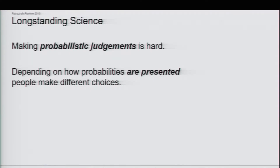This is just one tiny example of long-standing science: making probabilistic judgments is hard, and CogSci has been working on this for a very long time. Moreover, depending on how probabilities are presented, people will make different choices. I can tell you the same story — change the wording without changing the math — and in one case everybody chooses A, in another everybody chooses case B. So how we present probabilities and how people perceive risk also comes into these judgments.